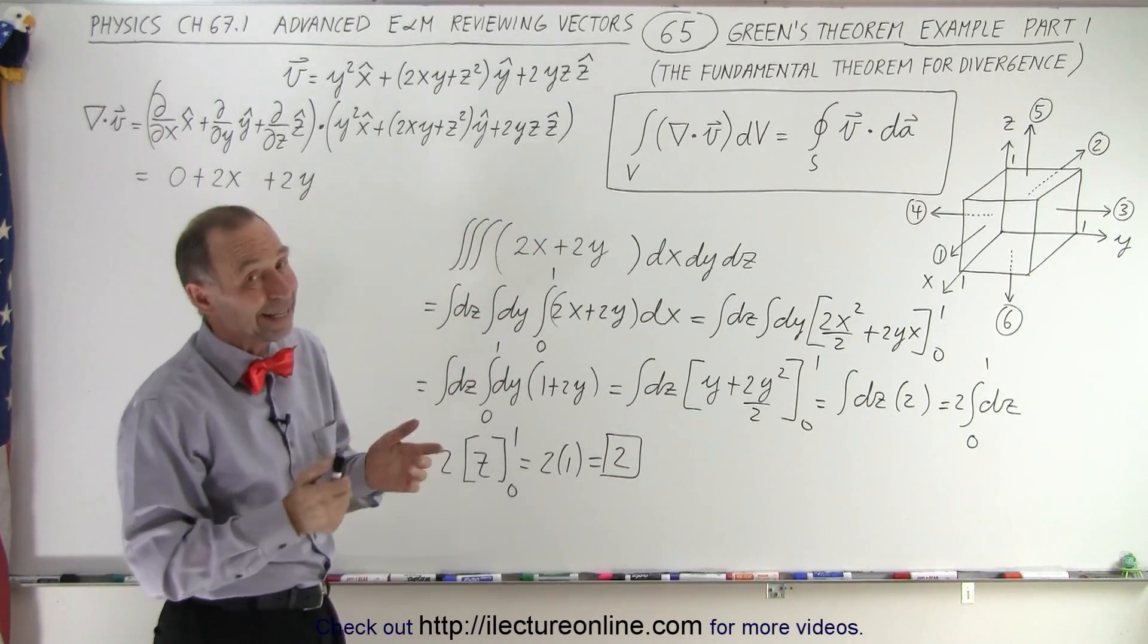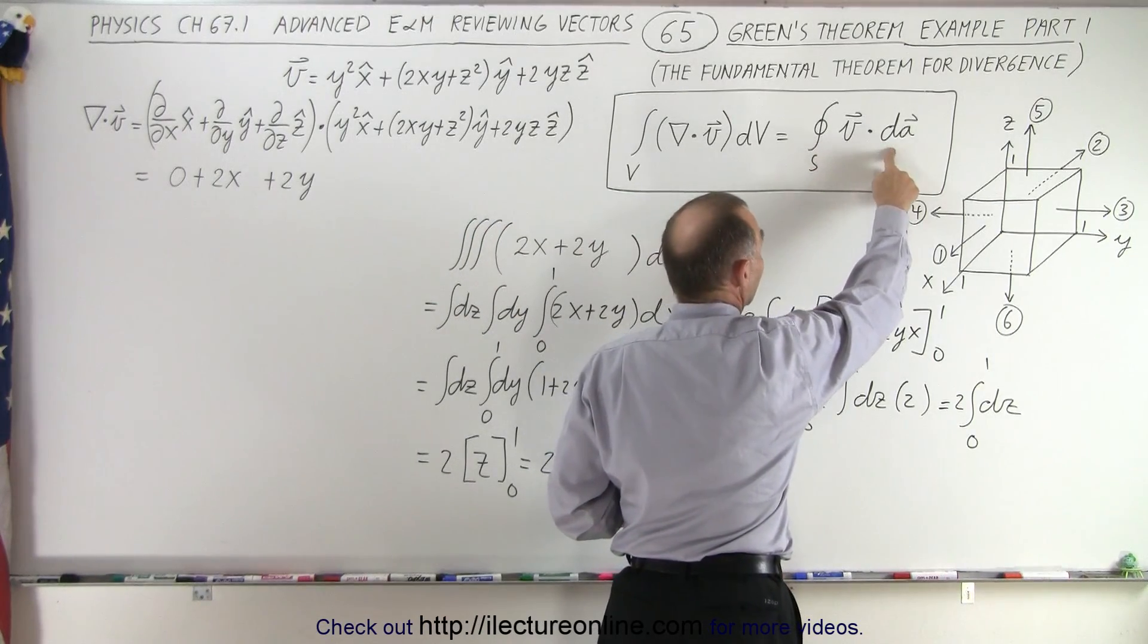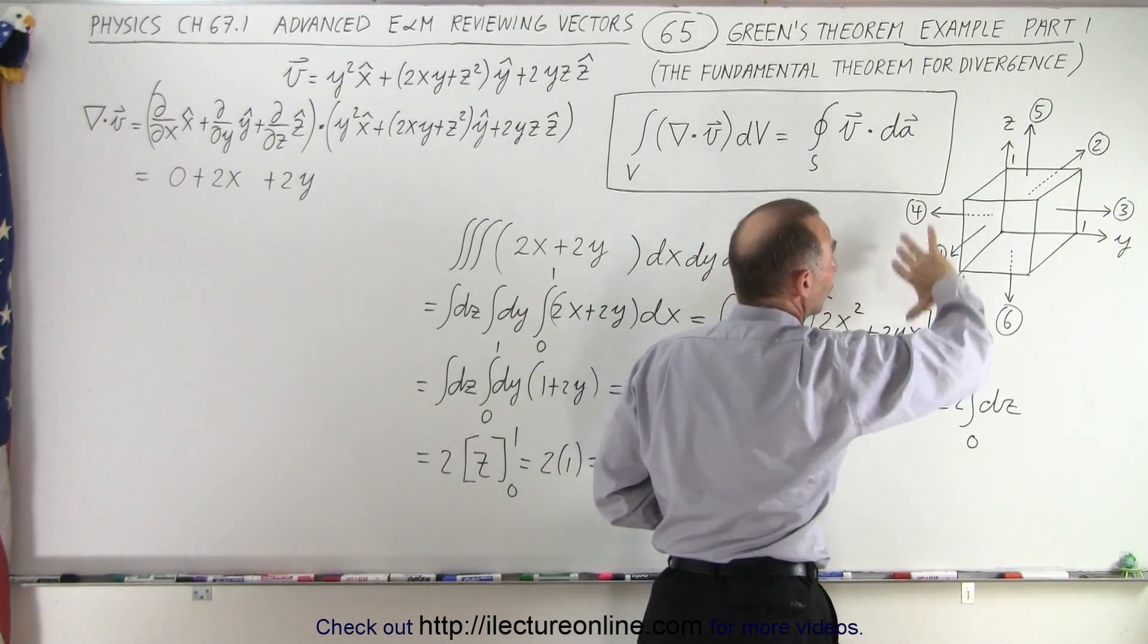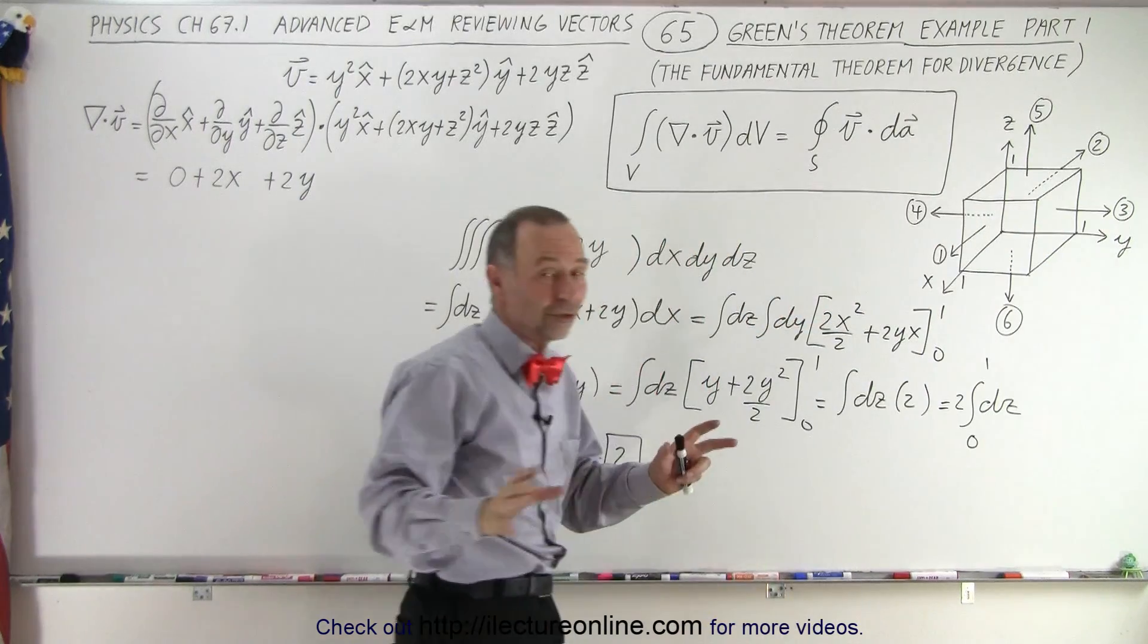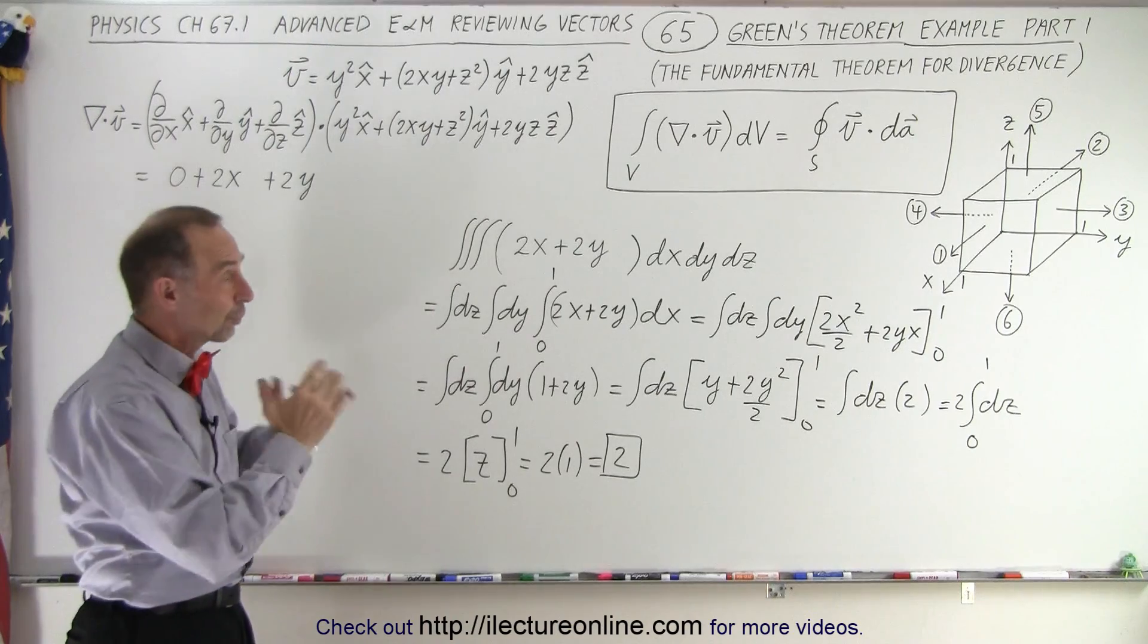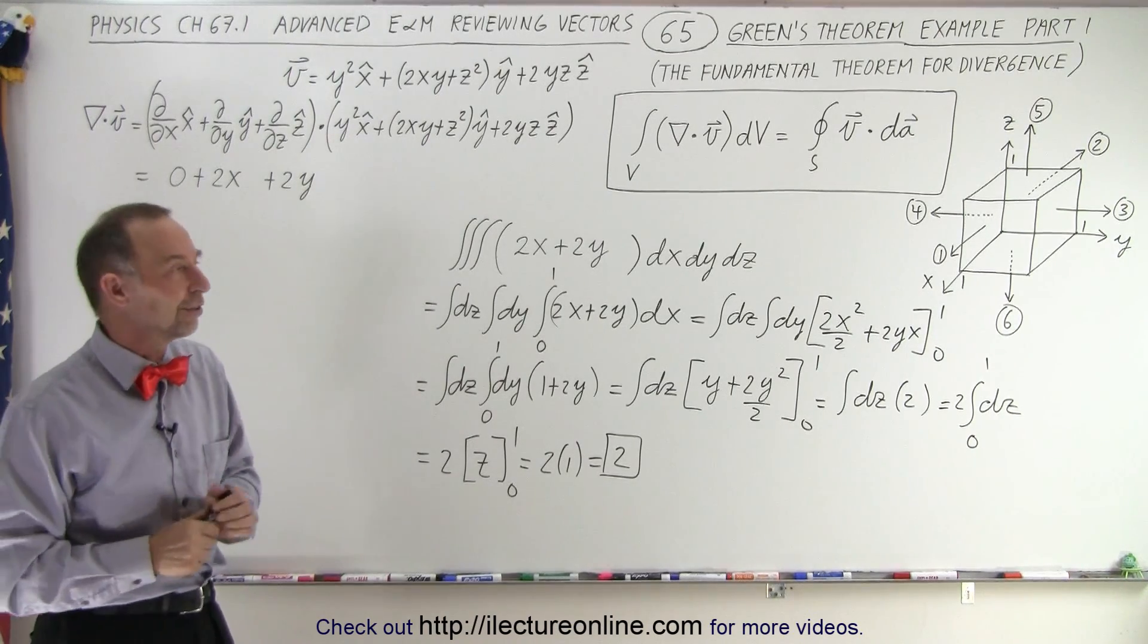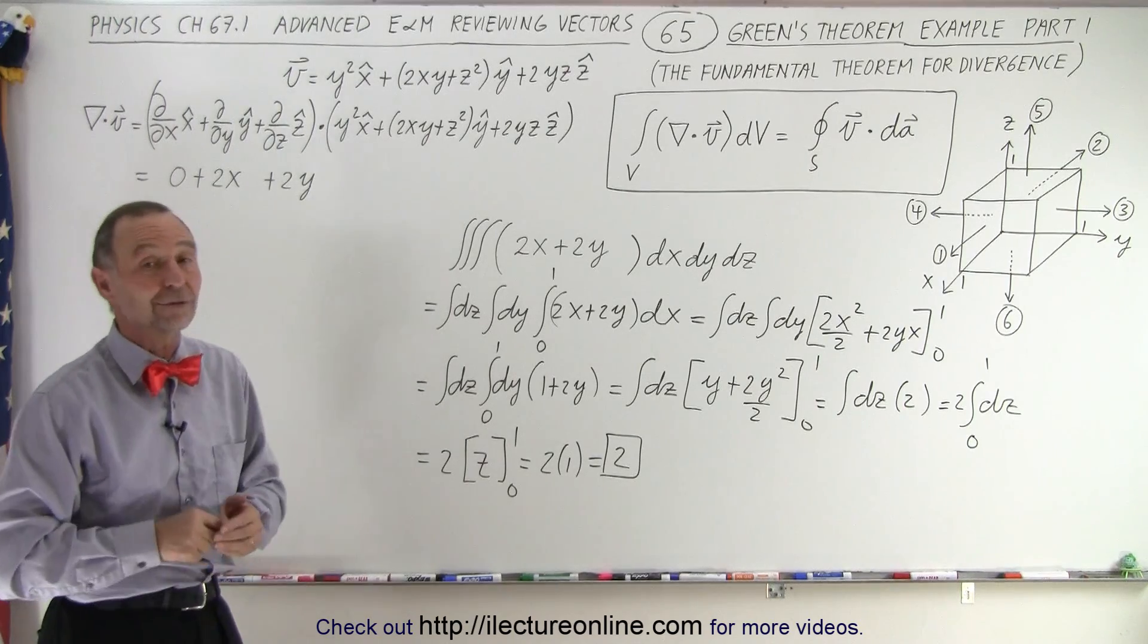Now that means that if we now calculate the vector field multiplied times the area element, and then we integrate over the entire surface of this cube, notice there are 6 surfaces, we should get the exact same value if of course Green's theorem works out the way it does. So let's try that on the next video to see if we do that we get the value of 2.